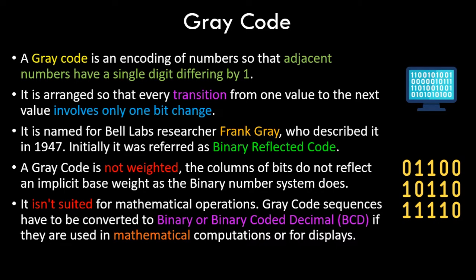Gray code is not weighted unlike binary code, so the columns of bits do not reflect an implicit base weight as in the binary number system — we have the 8421 code in binary with positional weights like 2 raised to 0, 2 raised to 1, and so on. Gray code does not apply those positional weights, and it is not suited for mathematical operations. Gray code sequences have to be converted to binary or BCD codes if they are to be used in mathematical computations.